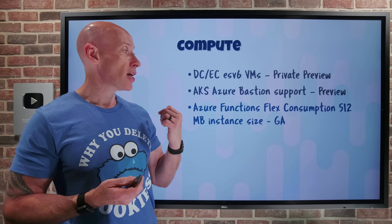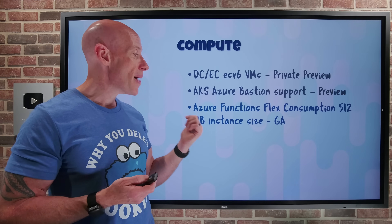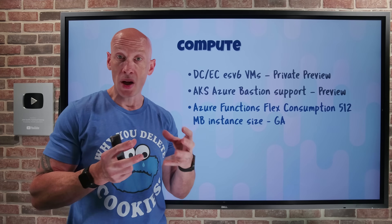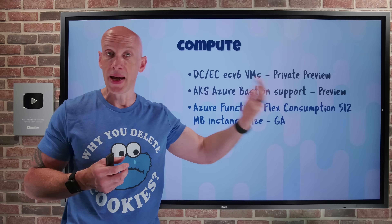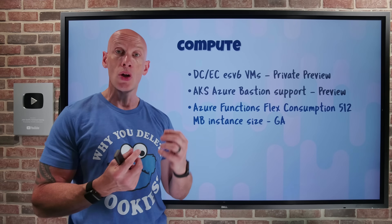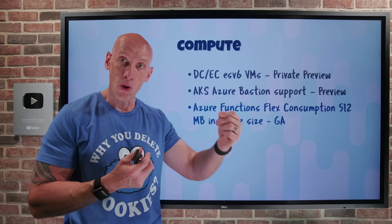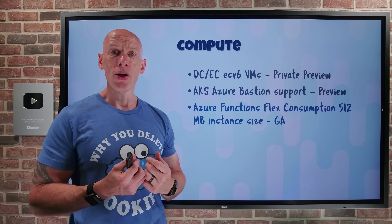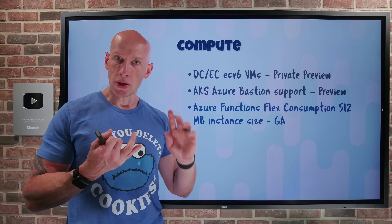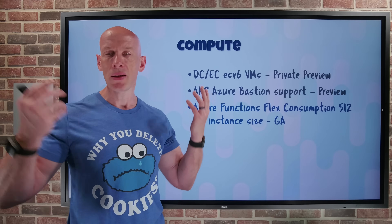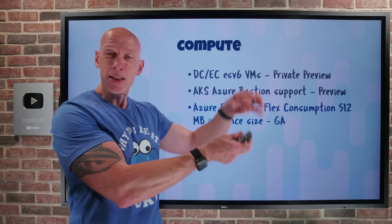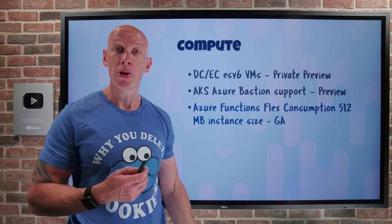Azure Functions has a new 512 MB instance size for the flex consumption plan. This is a new smaller size — you can still use the 2048 and the 4096 MB memory size options — but it gives you a new option to optimize and only pay for exactly what you need. There's also a new set of diagnostic settings for flex consumption, so I can collect application logs and resource metrics and send them to the usual suspects: Log Analytics Workspace, Storage Account, Event Hub, and partner solutions that trigger off the Event Hub as well.